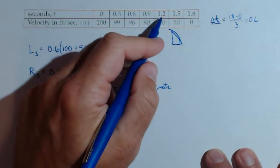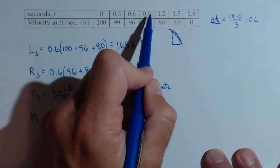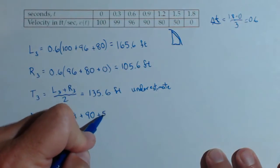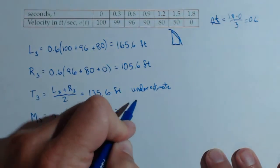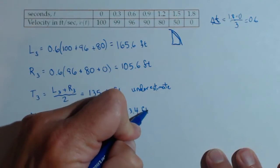For 0.6 to 1.2, our midpoint is 90. And for 1.2 to 1.8, our midpoint is 50. This gives us an estimate of about 143.4 feet.